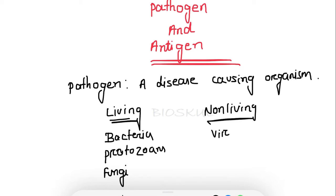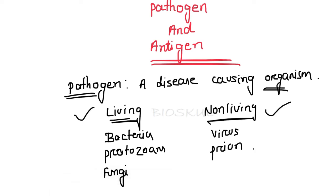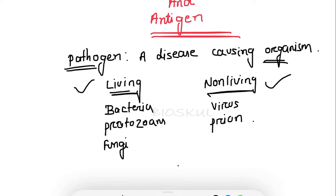Some pathogens are also non-living disease-causing organisms. For example, the virus — it is actually a connecting link between living and non-living organisms. Another example is a prion. So a pathogen is a disease-causing organism; some are living and some are non-living.